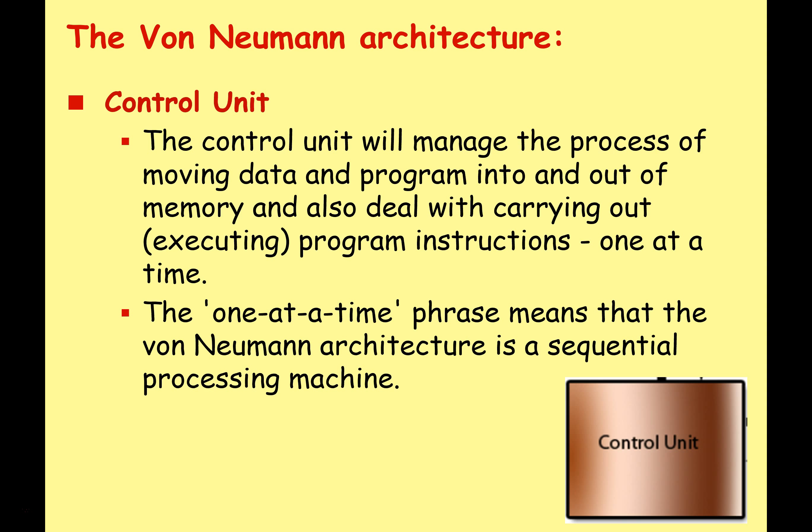We're also going to have a control unit. The control unit manages the process of moving data and programs into and out of memory, and also deals with executing programming instructions one at a time. This 'one at a time' means that von Neumann architecture is a sequential processing machine — it carries out instructions one at a time. The control unit executes the program's instructions, but it's also in charge of moving data from memory to the processing unit, and whether we are writing to or reading from memory.